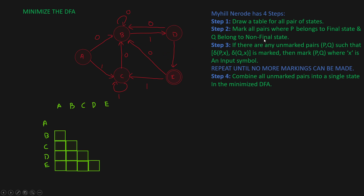Step one to minimize this DFA is to draw a table for all pairs of states. So over here we have got pairs: BA, AC, BC, AD, BD, CD, EA, EB, EC, and ED. These are all the pairs covered. You don't have to make a table for pairs like AA, BB, CC, DD, EE — that is a state paired with itself. Similarly, you only need one box for each pair; you don't need a box for both AB and BA. That's why we have marked only a half table.